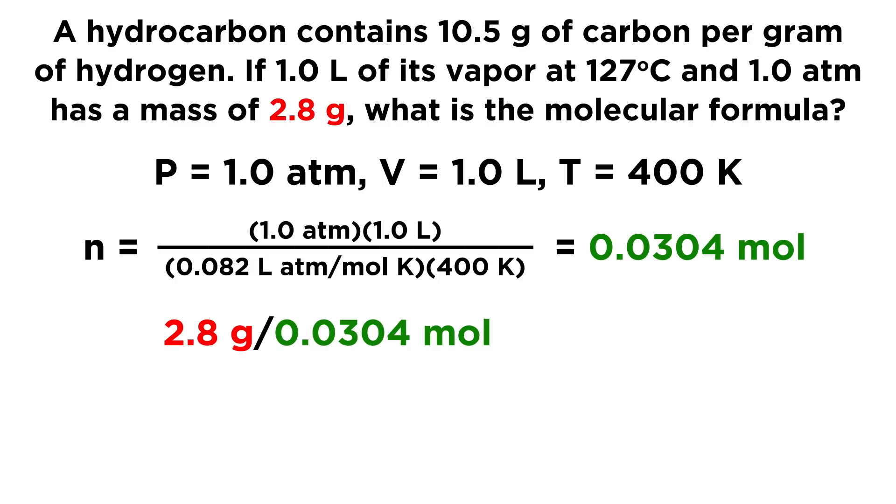Now we have some other information here. We know that this sample also has a mass of 2.8 grams. So we have a mass and a number of moles, and from that we can get the molar mass, because the molar mass is simply grams per mole. We take the grams value and divide by the moles value and get 92.1 grams per mole. So that is the molar mass of this unknown hydrocarbon.